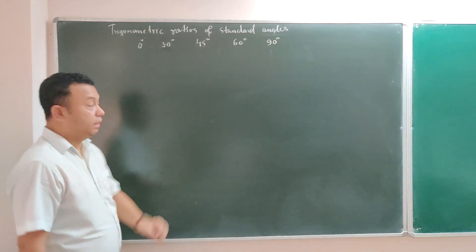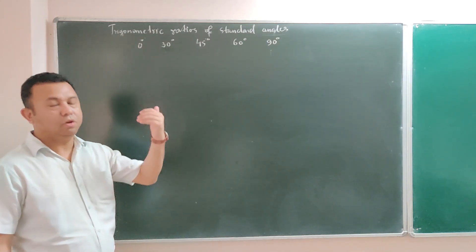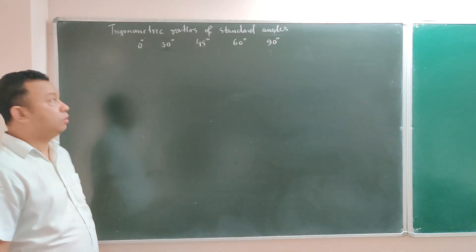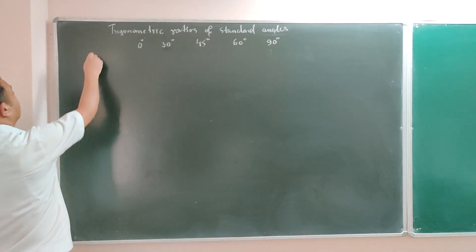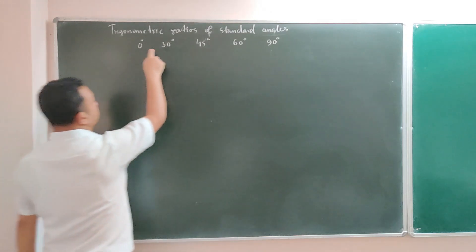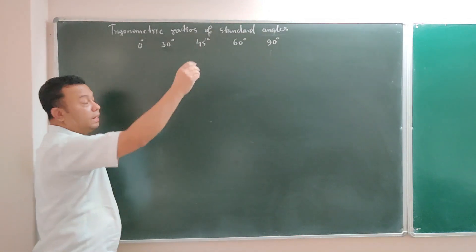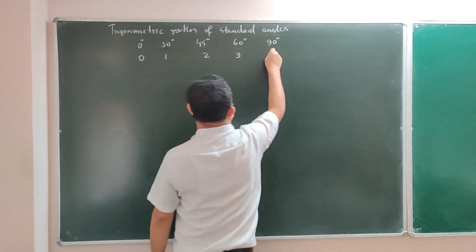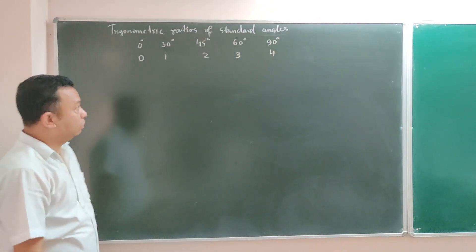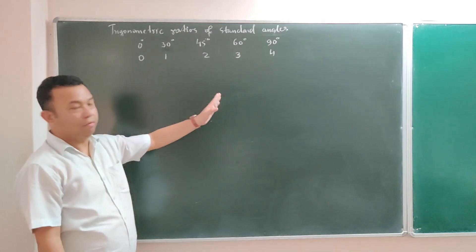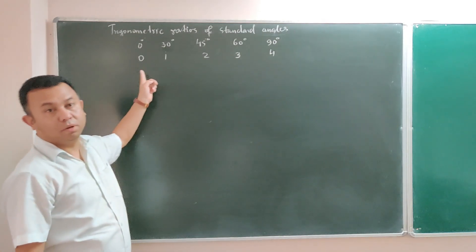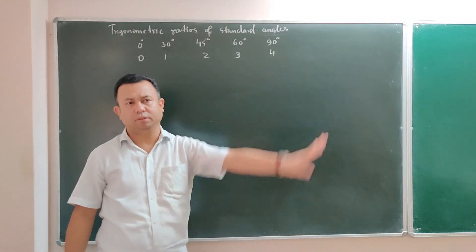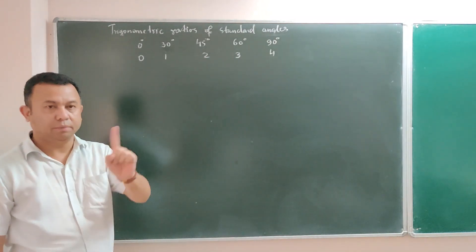Now how to create the table — follow this technique. Starting with 0°, 30°, 45°, 60°, 90°. Write down numbers: 0, 1, 2, 3, 4. The first step is to write from 0 to 4. Not from 1 to 5 — you have to write whole numbers, starting with 0. Write this serial number from 0 to 4.